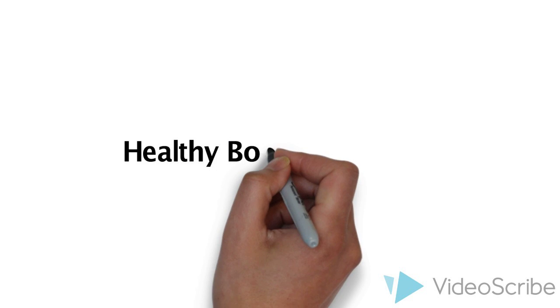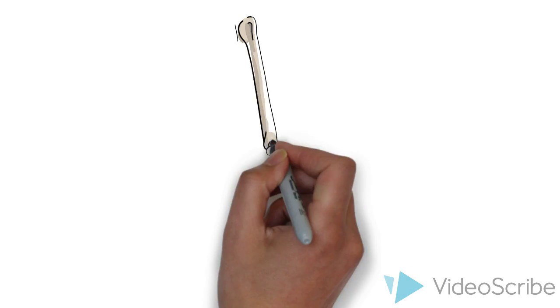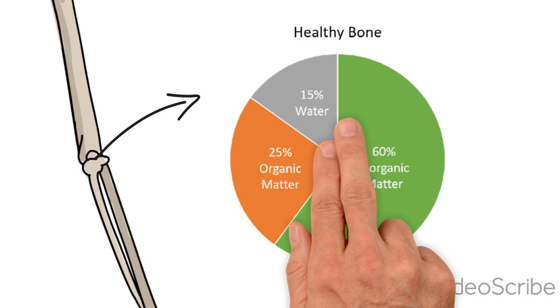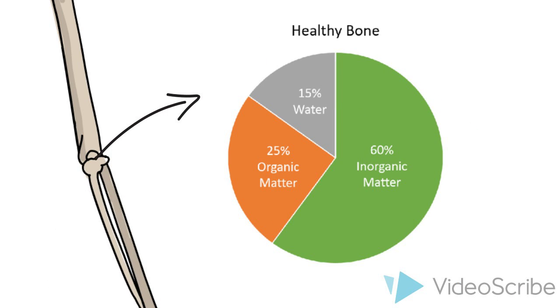So let us begin by talking about healthy bone composition. Here is a drawing of the bones in the human arm. Our bone tissue is composed of three main components: inorganic matter, organic matter, and water.